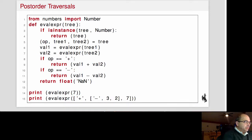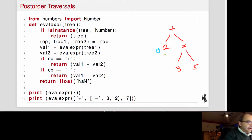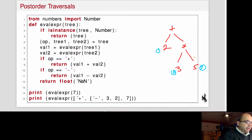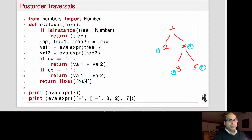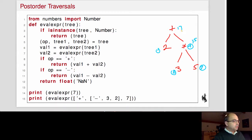A really good example of post-order is expression trees. Say I have a tree with a plus at the root, a two on the left, and a times node on the right with three and five as its children. With a post-order traversal, we visit the two, then the three, then the five. When we reach the times node, we've already visited its children, so we compute three times five to get 15. Then we add two and 15 to get 17. It's important to visit the children first because that's how we get their values.